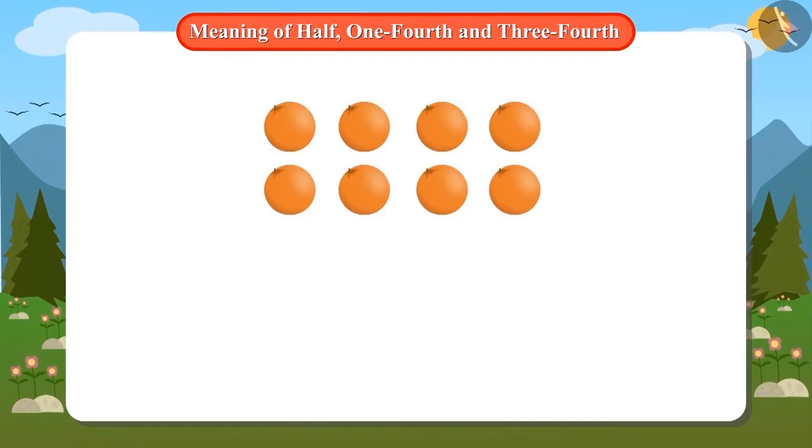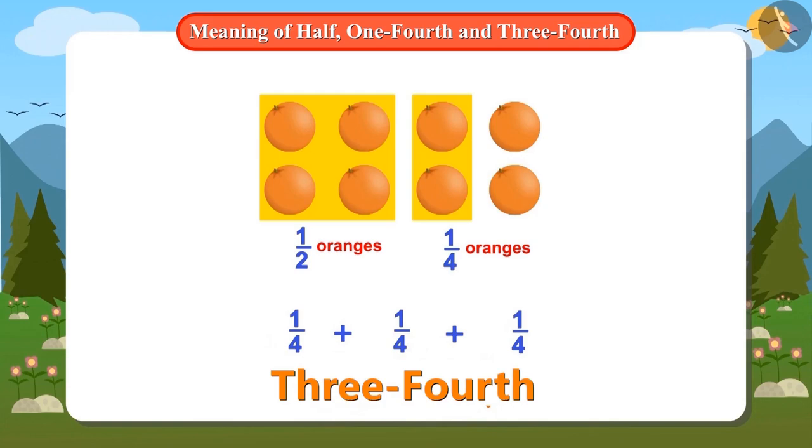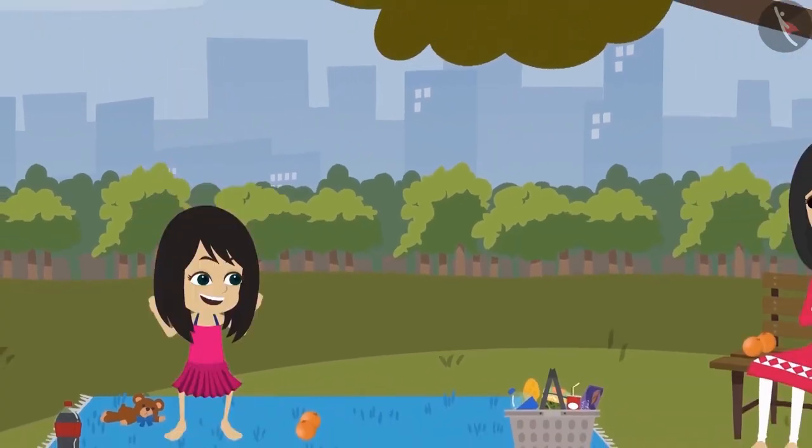We gave papa half of the total oranges. If you divide this half also in half, you will get two quarters. Mummy already has a quarter of the total oranges. It means mummy and papa have three quarters. Now Neha is even happier because now she can add half and quarter objects. Neha has learned.